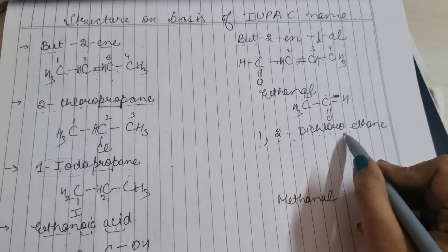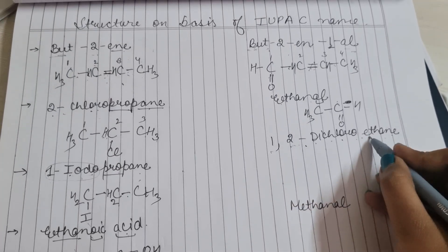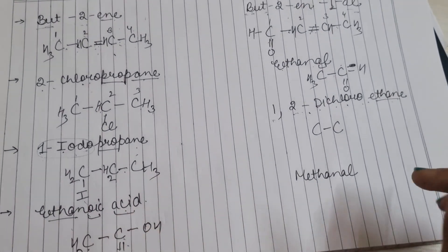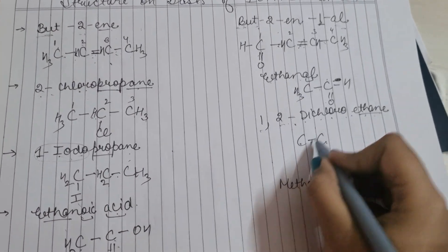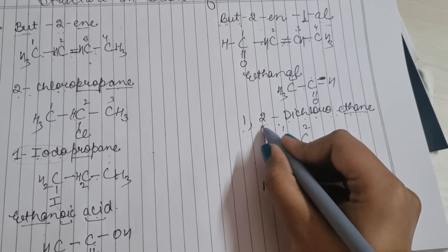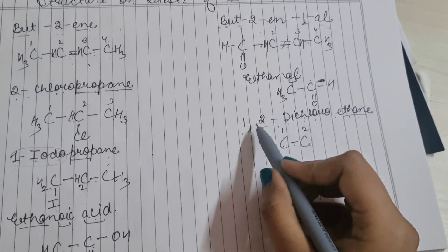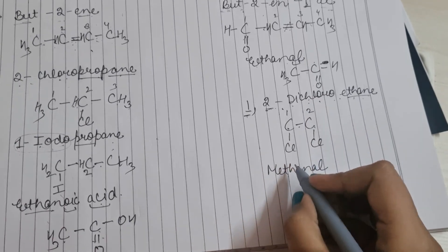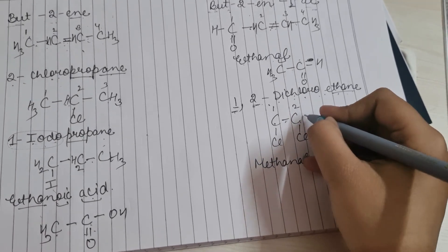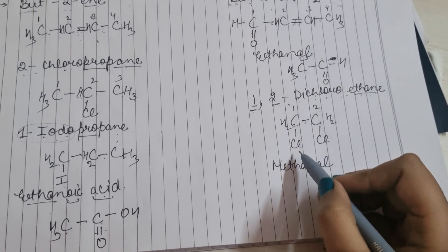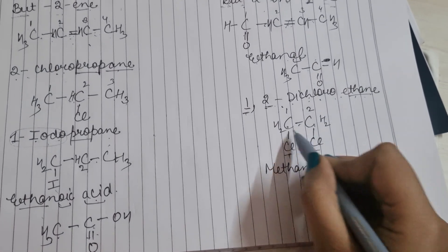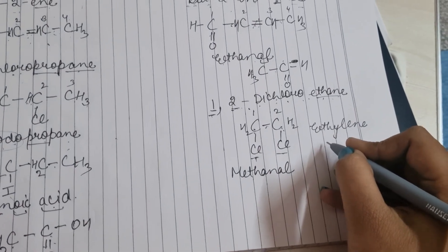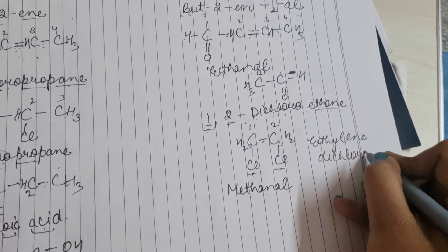1,2-dichloroethane: 'ith' मतलब 2 carbon, single bond, numbering 1 और 2। 1 पर भी chloro, 2 पर भी chloro — दोनों पर chlorine है। यह 2 halogens on different carbons वाला structure है — यानि इसे Ethylene Dichloride भी बोल सकते हैं। Structure: CH₂Cl-CH₂Cl।